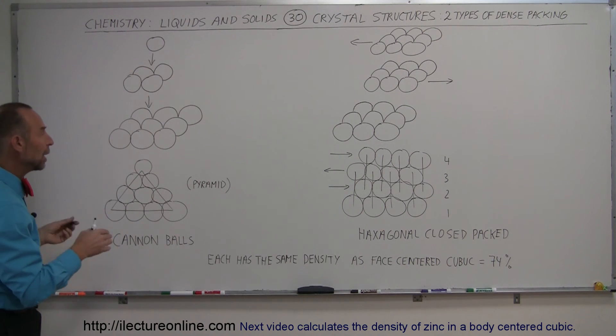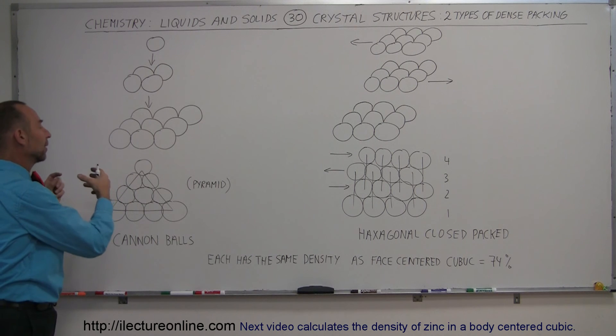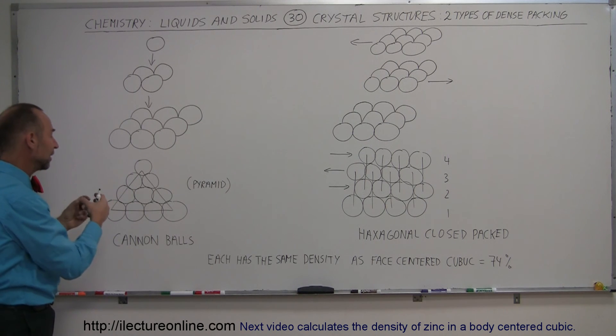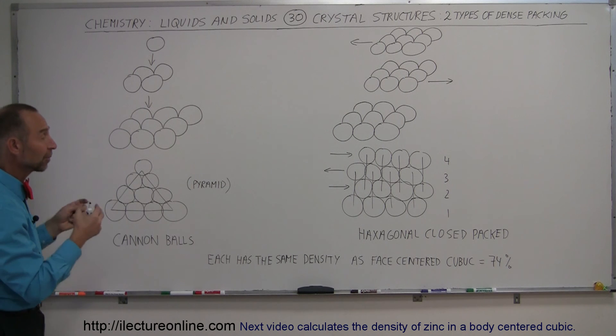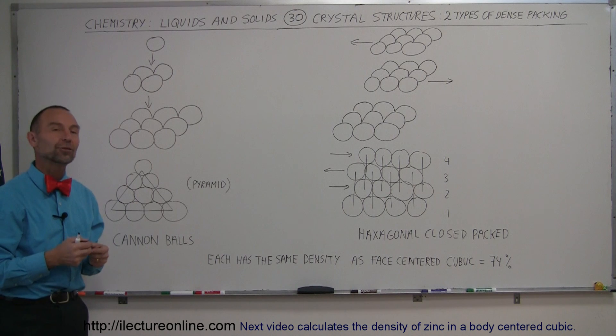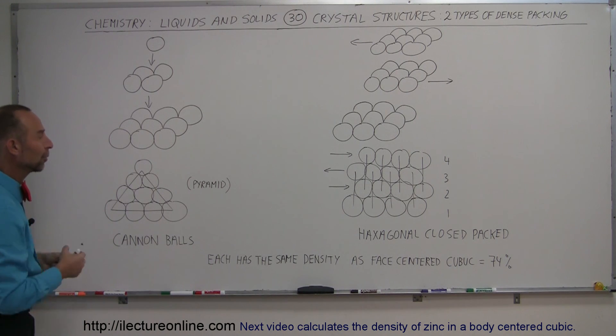This is the densest way in which nature can put spherical objects together in the densest arrangement possible, in such a way that 74% of the volume is occupied by the atoms or the ions, and only 26% is left for the small spaces in between them. And there you go, that's two more additional ways in which nature's packed atoms in the closest arrangement possible.